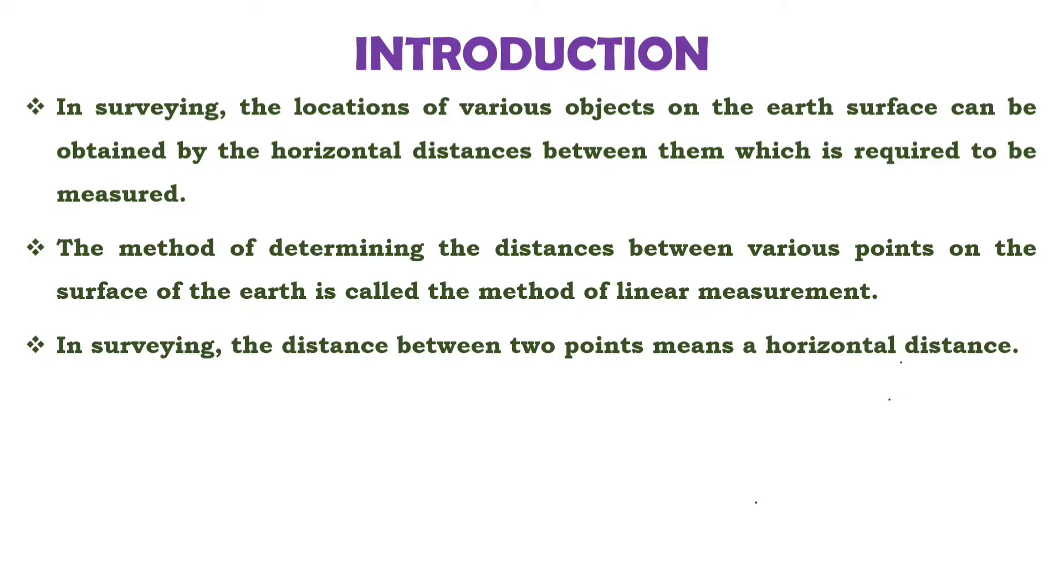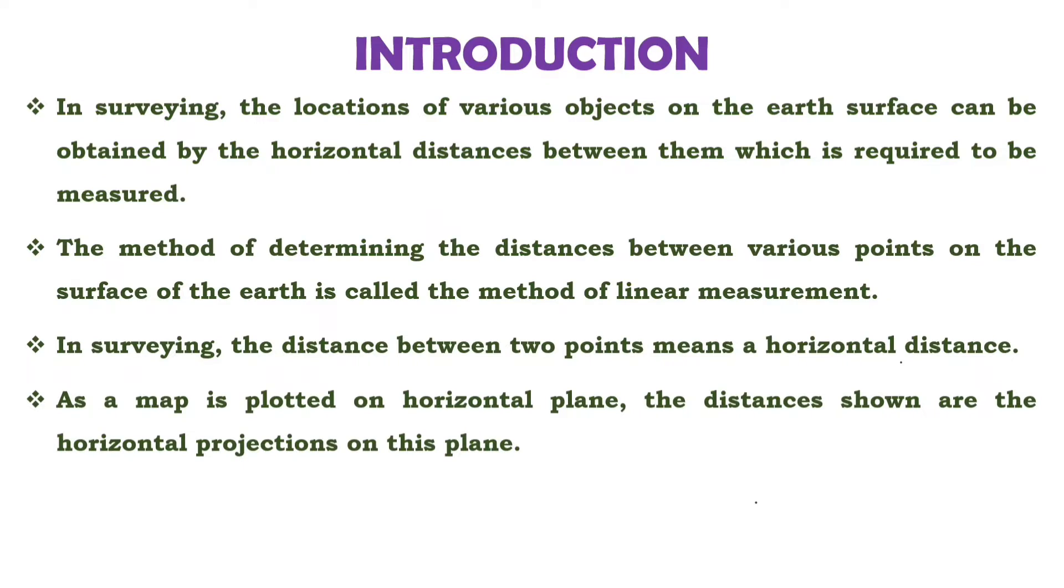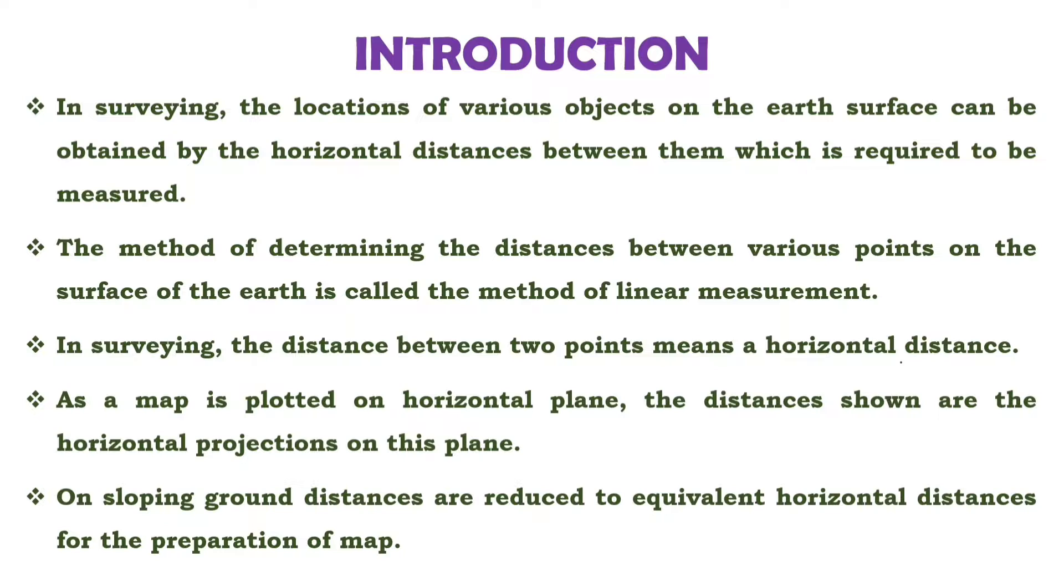In surveying, the distance between two points means horizontal distance. As a map plotted in horizontal plane, the distances shown are horizontal projections on this plane. Initially, if the distance is measured inclined, it is reduced in horizontal plane - it is converted into equivalent horizontal distance. On sloping ground, distances are required to equivalent horizontal distances for the preparation of map. In linear measurement, all the measurements are taken on horizontal plane.